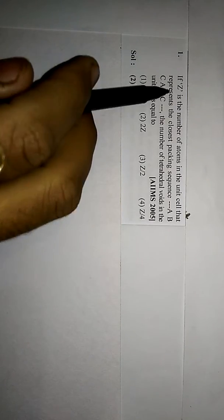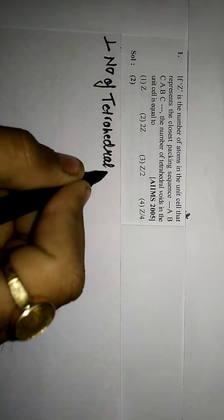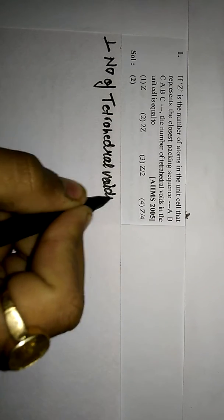Question number one: if Z is the number of atoms in the unit cell that represents the closest packing sequence ABC ABC type, the number of tetrahedral voids in the unit cell is equal to? We know that the number of tetrahedral voids is equal to twice the number of atoms.